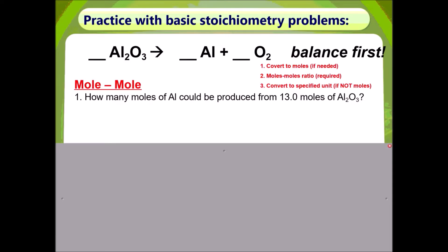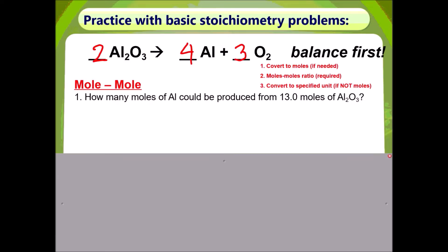We have this equation right here, which we must balance first. Here are the coefficients once it is balanced. This is going to be a mole-to-mole problem. The question asks: how many moles of aluminum could be produced from 13.0 moles of aluminum oxide?